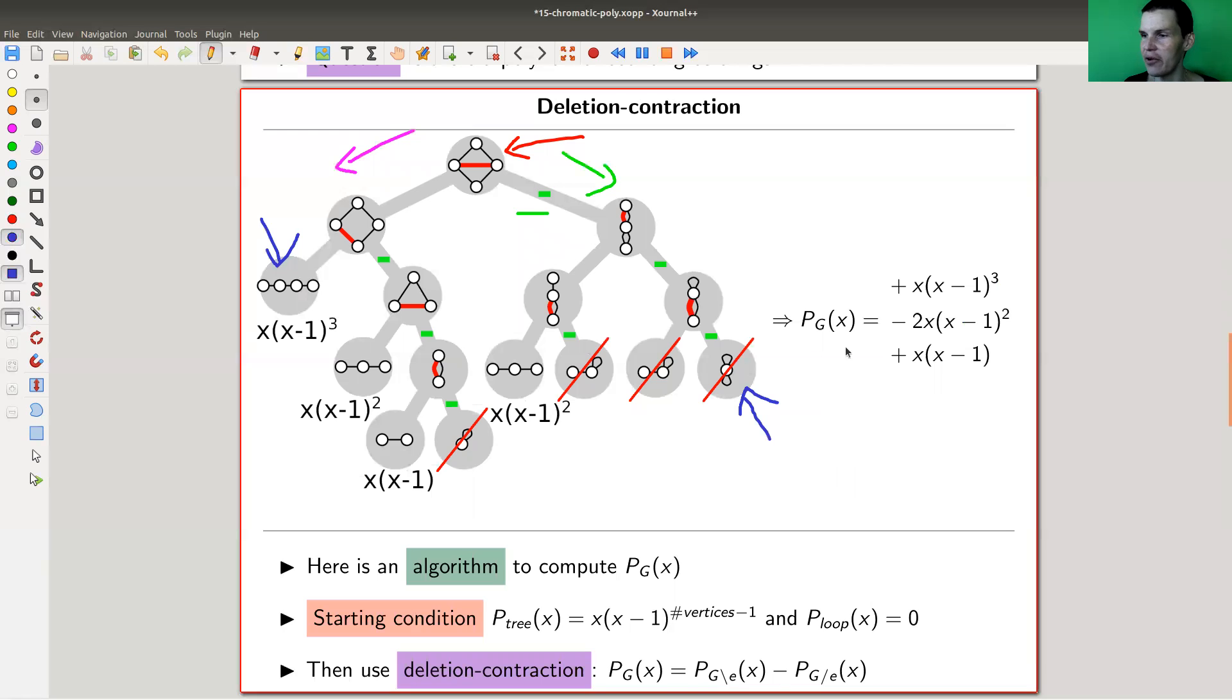And then the rule is pretty simple. Whenever you have something with a circle, it dies. It doesn't contribute anyway, because if you have a circle, and you take this adjacency relation series, then this has no coloring, right? So the circles just die, fine.